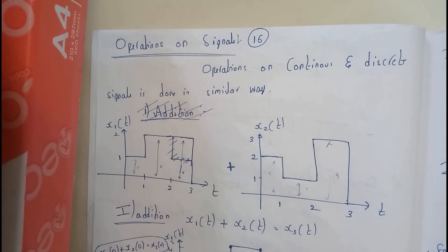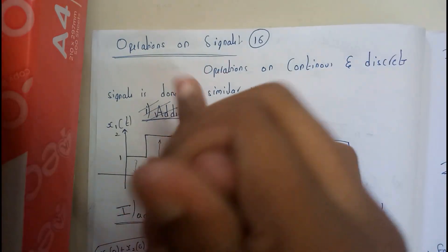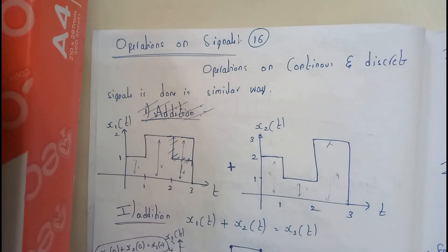Hello guys, we are back with our next tutorial. In this tutorial let's see operations on signals. We will be doing three operations: addition, subtraction, and multiplication. These are the most common three operations that we can do between two signals.